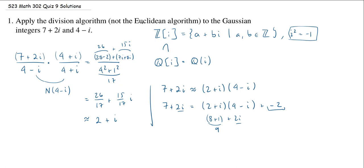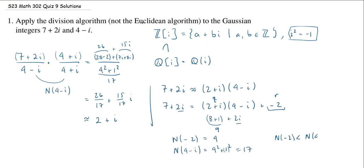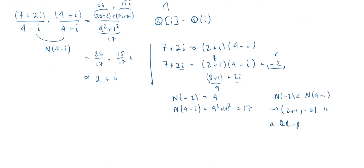To verify that Q = 2 plus i and R = minus 2 is a legitimate QR pair, I also need to show that R has norm less than the norm of the divisor 4 minus i. The norm of negative 2 is equal to 4, and the norm of 4 minus i is 4 squared plus 1 squared, which is 17. Since 4 is less than 17, the norm of negative 2 is less than the norm of 4 minus i, and this confirms that (2 plus i, minus 2) is a valid QR pair for the dividend 7 plus 2i and divisor 4 minus i.